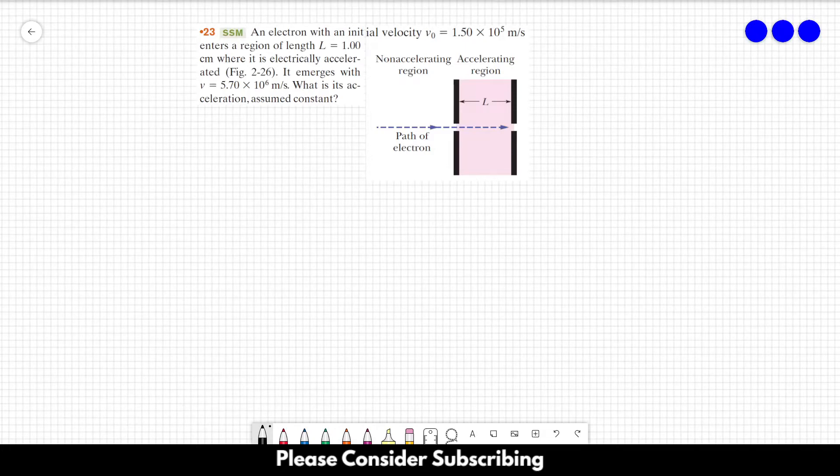Number 23. An electron with an initial velocity v₀ of 1.5 times 10 to the 5 meters per second enters a region of length L equals to 1 centimeter, where it is electrically accelerated. So the electron enters this region over here, and then it is accelerated. It emerges with the velocity of 5.7 times 10 to the 6 meters per second.